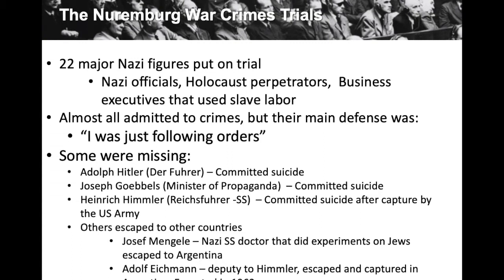As the war was winding down and German defeat was inevitable, Himmler fled west to try to surrender to the Americans rather than the Russians. He disguised himself in a regular soldier's uniform with an eye patch. He was eventually found out, and upon discovery he killed himself with a cyanide capsule.